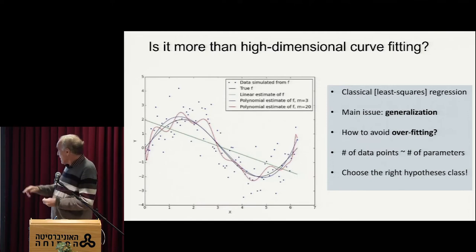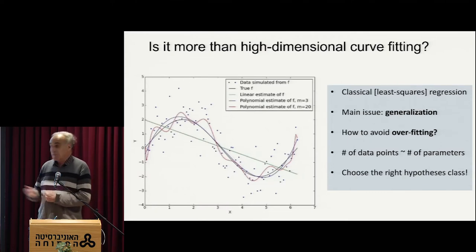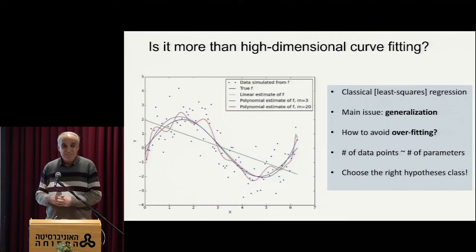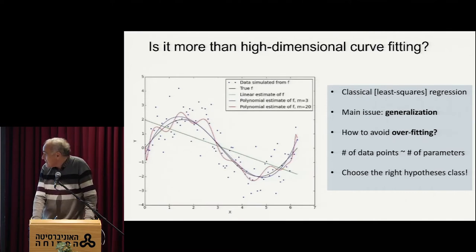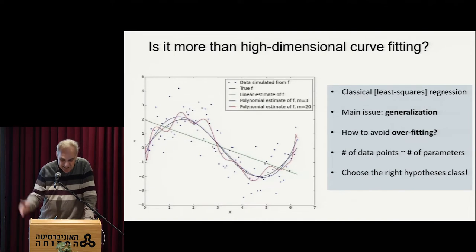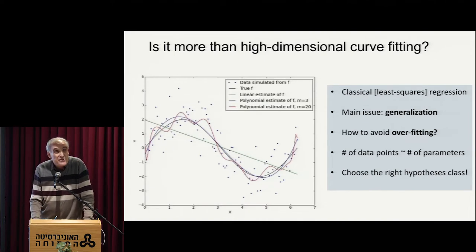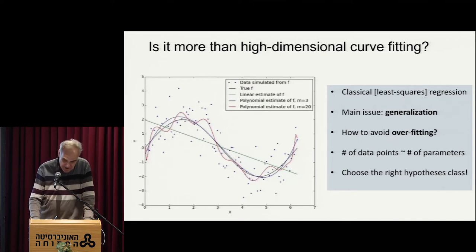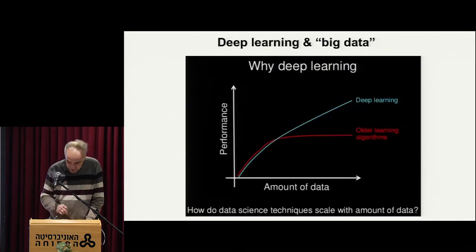Is it really more than that? Gauss already knew how to do curve fitting with least squares. The question is really whether this third phase of learning theory, which is deep learning, is doing more than curve fitting. I argue it does. Not everybody agrees with me, but that's all right.